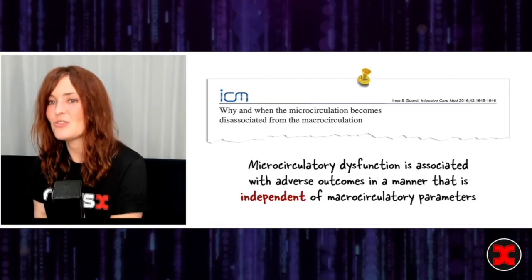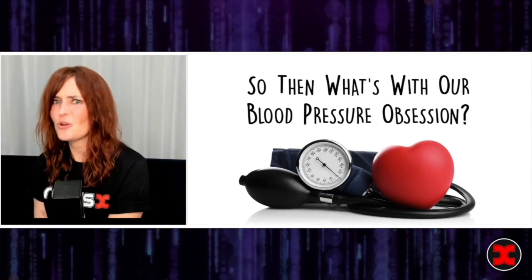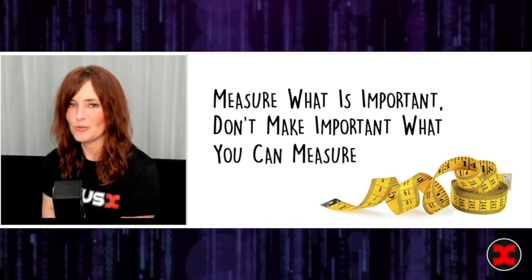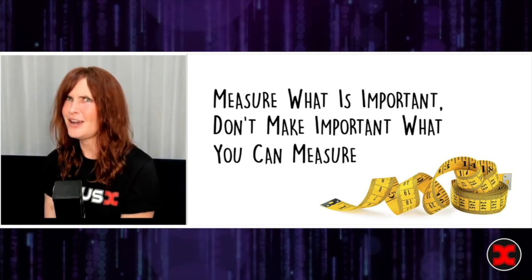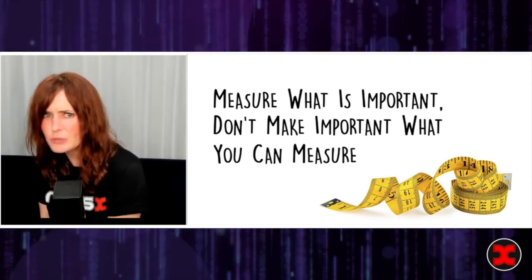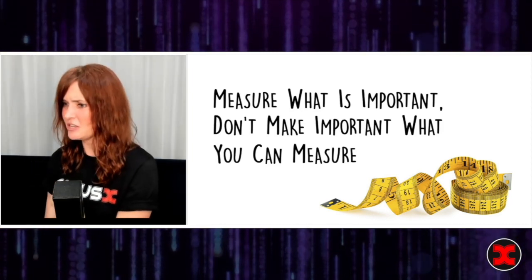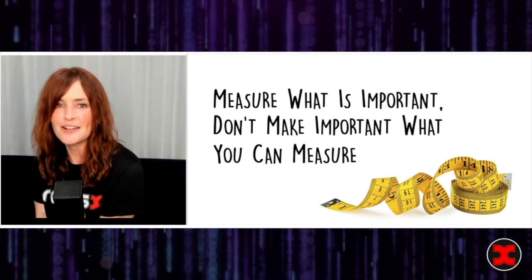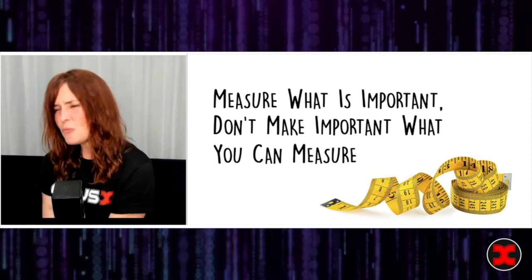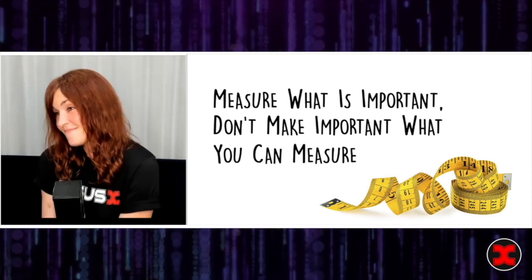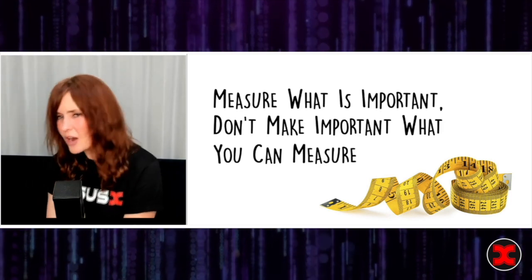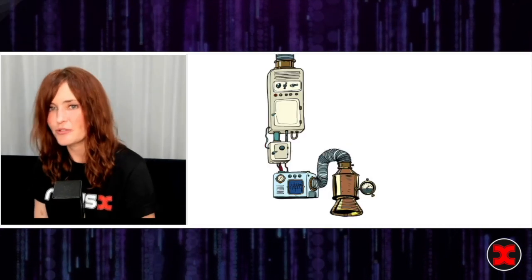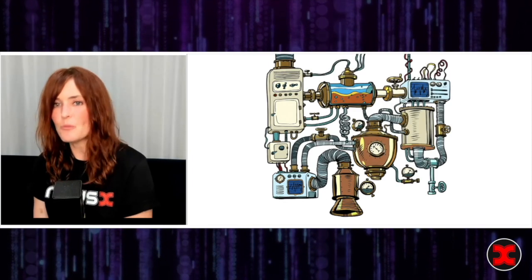We can make blood pressure look beautiful — that doesn't mean the patient is okay. So why the blood pressure obsession? I think there are two things. First, we measure what's easy, not necessarily what's important. Doctors love data and measurement. Blood pressure is measurable; you can write a protocol that says if the MAP is less than 65 the patient is in shock. You can't really find a single metric for tissue perfusion based on clinical gestalt. But blood pressure is just one of many factors affecting tissue perfusion, and focusing only on it misses the big picture.